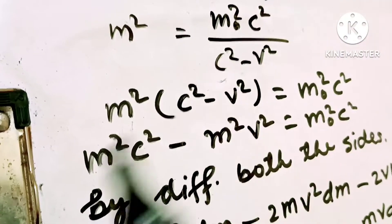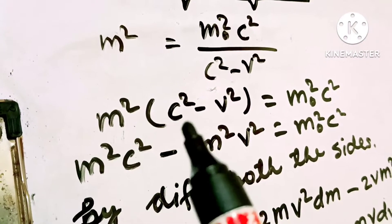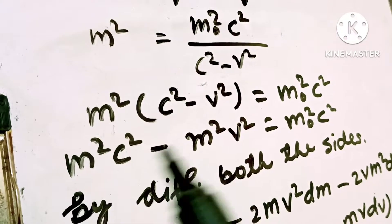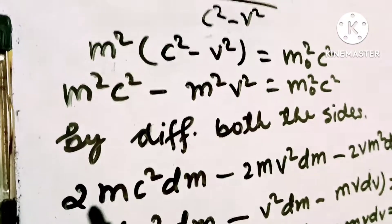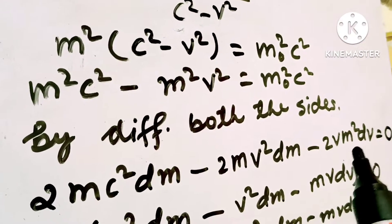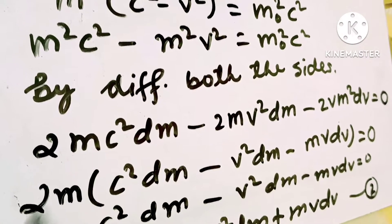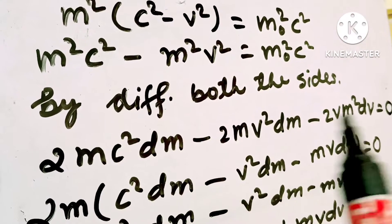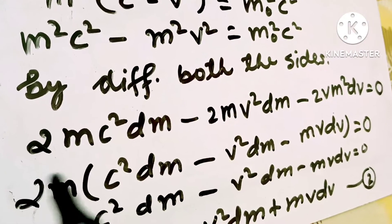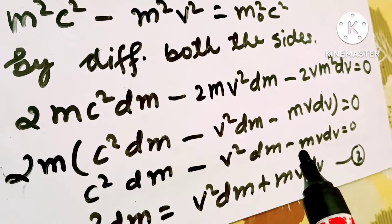Multiplying through, we get m²·c² minus m²·v² equals m0²·c². By differentiating both sides: 2m·c²·dm minus 2m·v²·dm minus 2v·m²·dv equals 0, since m0²·c² is constant. Taking 2m common from all terms, we get c²·dm minus v²·dm minus mv·dv equals 0.